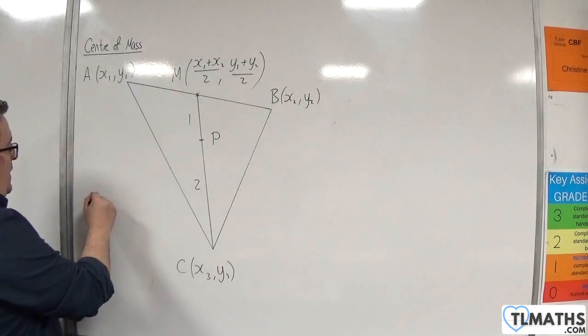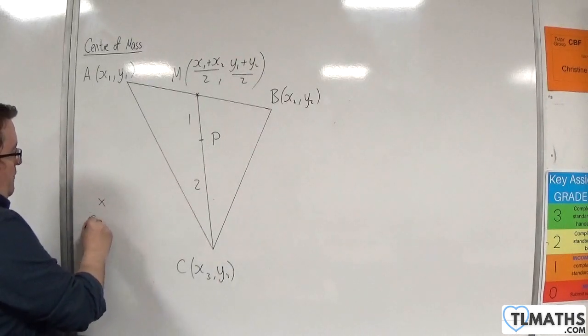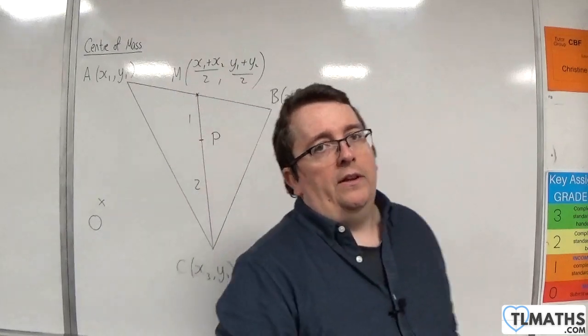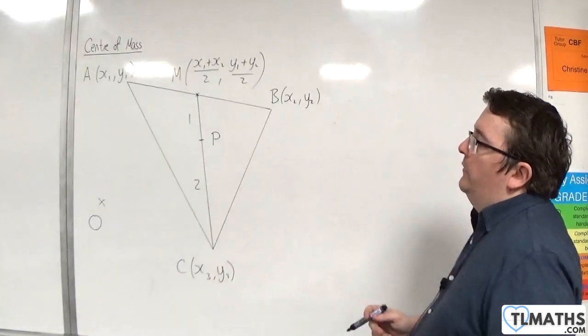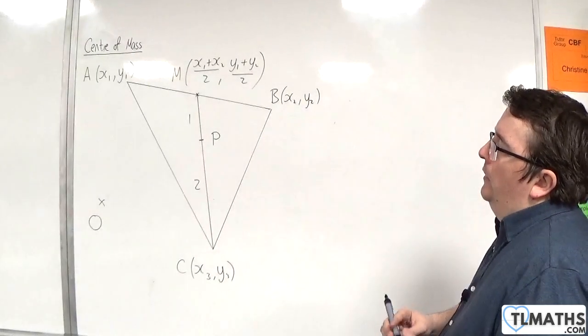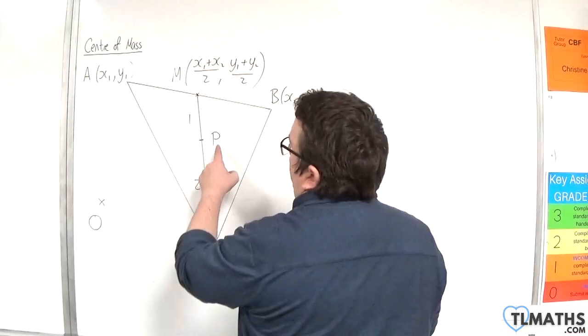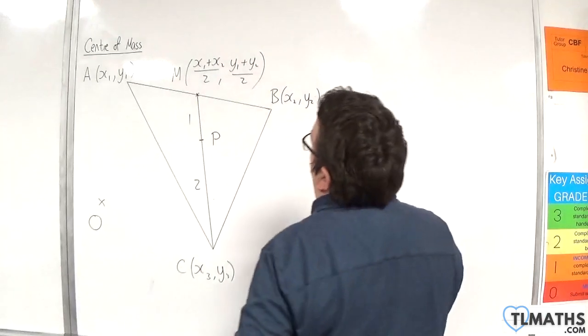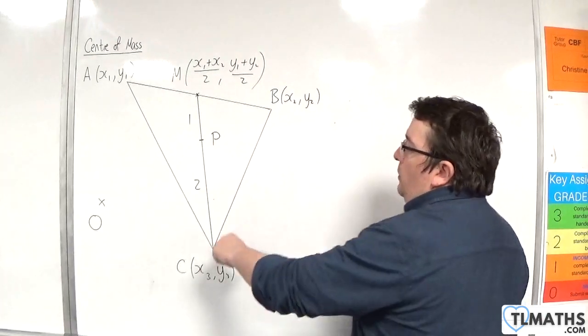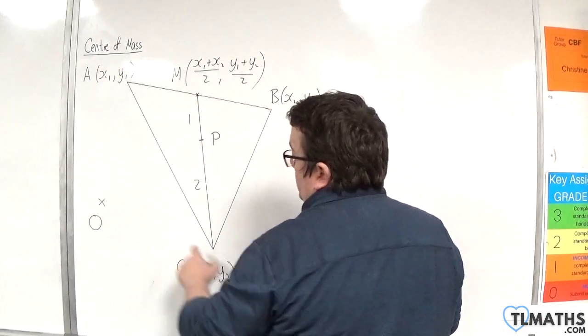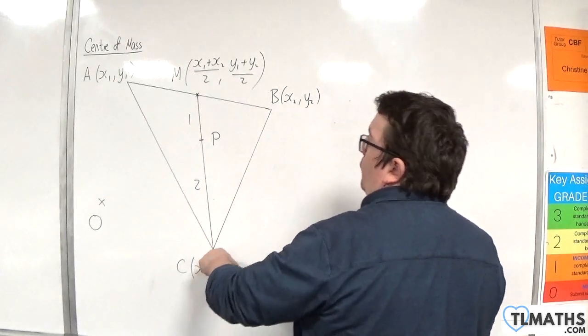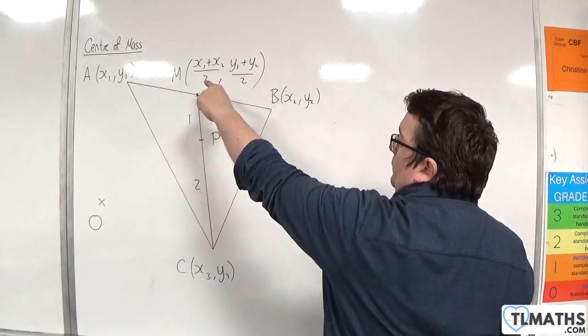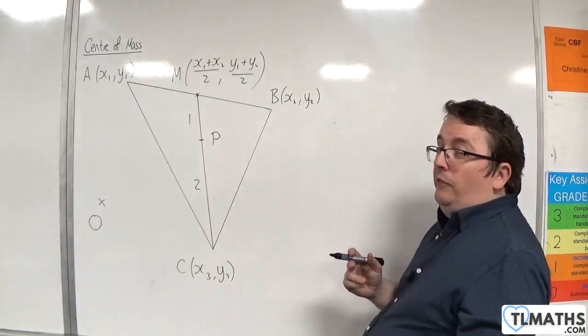And, let's say we've got the origin somewhere over here, because I'm going to do this using vectors. I think that's probably the easiest way to visualise this. So, I want to get to point P. Now, to get to point P, I'm going to need to go two-thirds, so I'm going to go from the origin to C, and then two-thirds of the way along CM. So, the first thing I'm going to need is CM.